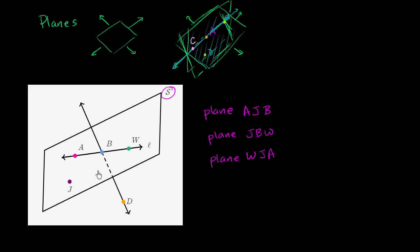But I could not specify this plane uniquely by saying plane A, B, W. And the reason why I can't do this is because A, B, W are all on the same line. And this line sits on an infinite number of planes. I could keep rotating around the line just as we did over here. It does not specify only one plane.